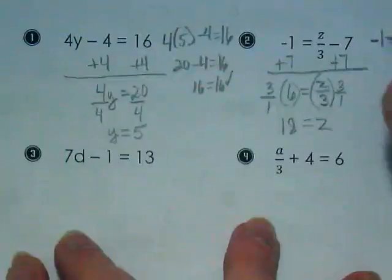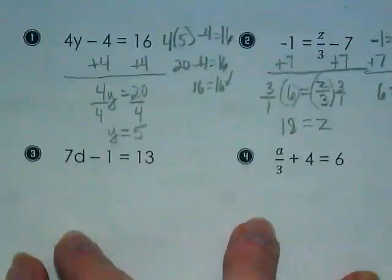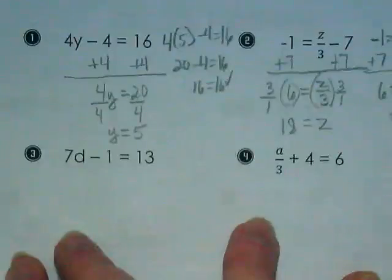We can check our work by putting 18 where the z was. Again, we're going to just combine like terms as our first step. 6 is equal to 18 over 3. And if I divide 18 by 3, I do get 6.